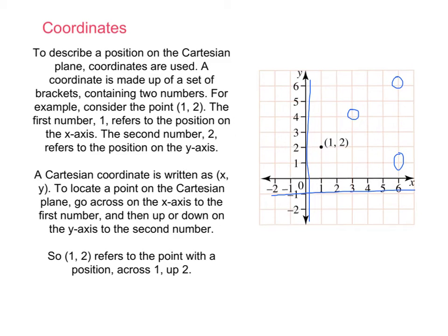A Cartesian coordinate is written as (x, y). So, the first number is x, the second number is y. To locate a point on the Cartesian plane, we go across to the x-axis first, and then we go up or down to the y-axis to get the second number.